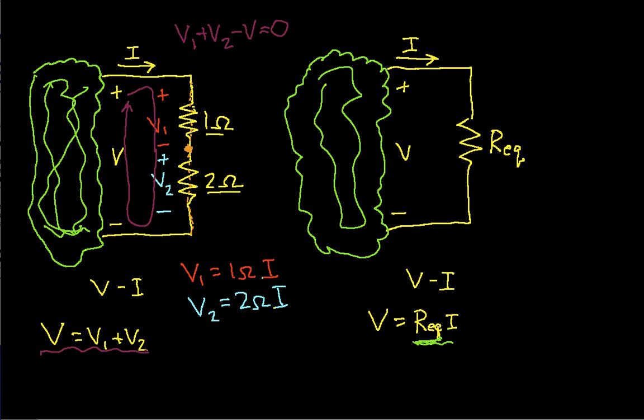So now if I plug in for V1 and V2, I have that V1 again is 1 ohm times I, and V2 is 2 ohms times I. And you can see, I can factor an I out of both of these terms. And I get then that, or I can write this as 1 ohm plus 2 ohms times I.